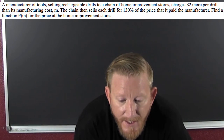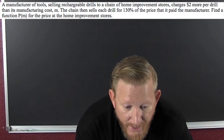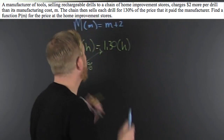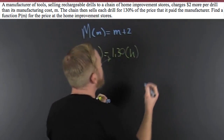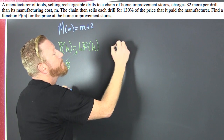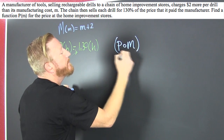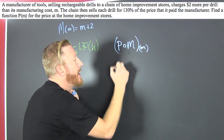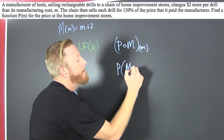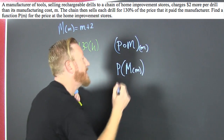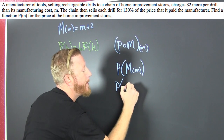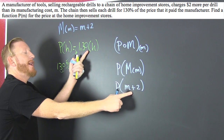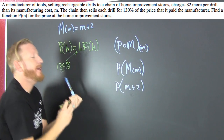Find a function p of m for the price at the home improvement store. So now we're going to compose. We're looking for p of m composed with m. So what do I have? p of m — my big M is m plus two.